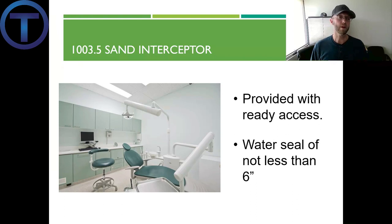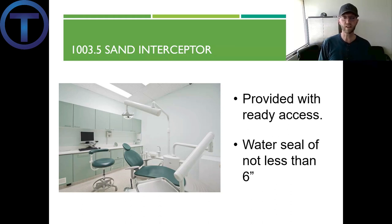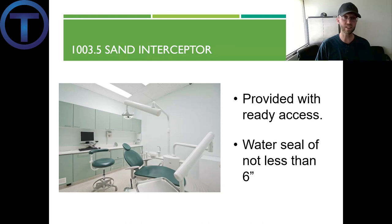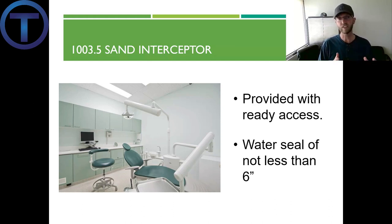Section 1003.5 talks about sand interceptors. They need to be provided with ready access and have a water seal of not less than six inches. Where would you need a sand interceptor? One example is a dental office — if they're doing any grinding of teeth, they may have a sink with a lot of sediment that can clog the drains, so there's a unique trap under there just to catch that ground sediment. Another example may be a jewelry shop or a place that polishes rocks.